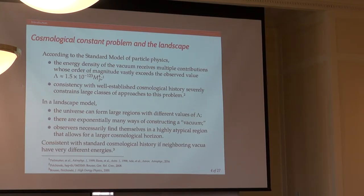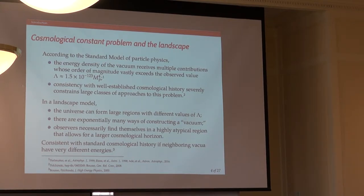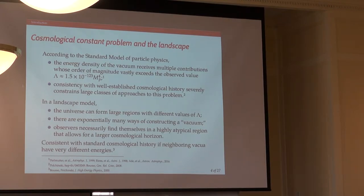In such a model, it's going to be consistent if neighboring vacua have very different energies, corresponding to the flipping of a sign of one of these modes. That will create a very small cosmological constant from a larger one of size O(1). The models we have are built upon summing together a variety of mathematical objects, with the goal that they cancel in just the right way to produce something very, very small.